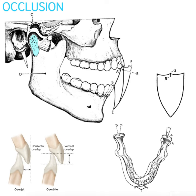Hey everyone, this is Ryan and this is a Part 2 video for occlusion. Make sure if you haven't already seen my Part 1 on occlusion to get some basic ideas of why the mandible moves, how it moves, and the range of motion as represented by this lateral diagram called a Posselt's diagram.